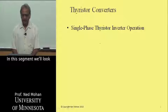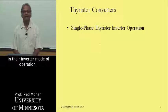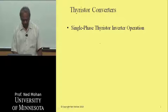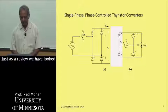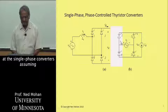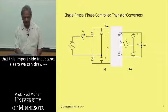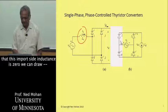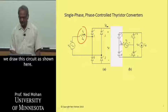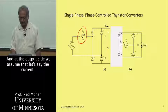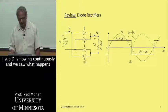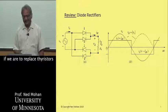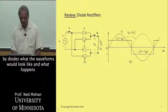In this segment, we will look at single-phase thyristor converters in their inverter mode of operation. Just as a review, we have looked at the single-phase converters. Assuming that this input side inductance is zero, we can redraw the circuit as shown here. At the output side, we assume that the current I-sub-D is flowing continuously. And we saw what happens if we were to replace thyristors by diodes and what the waveforms would look like.